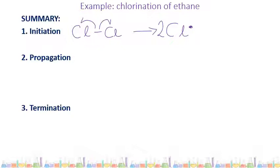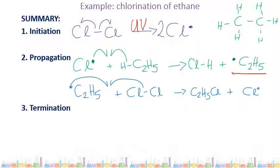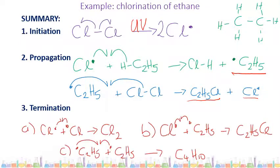Step one is initiation — the breaking down of a chlorine molecule into two chlorine free radicals by UV light. Propagation: a chlorine free radical attacks an ethane molecule, producing an ethyl free radical. That ethyl free radical then attacks a chlorine molecule, producing chloroethane and another chlorine free radical. That propagation step sets up a chain reaction that happens over and over. Termination occurs when the free radicals react together to form stable molecules.